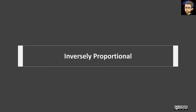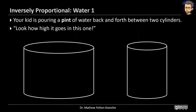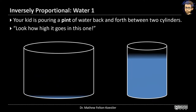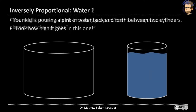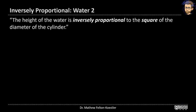Now I want to talk about inversely proportional situations. Your kid has a pint of water and is pouring it back and forth between two cylinders very carefully — always the same amount of water, no spilling. You start thinking about the relationship between the height of the water and the size of the cylinder, and after some experiments you conclude: the height of the water is inversely proportional to the square of the diameter of the cylinder.